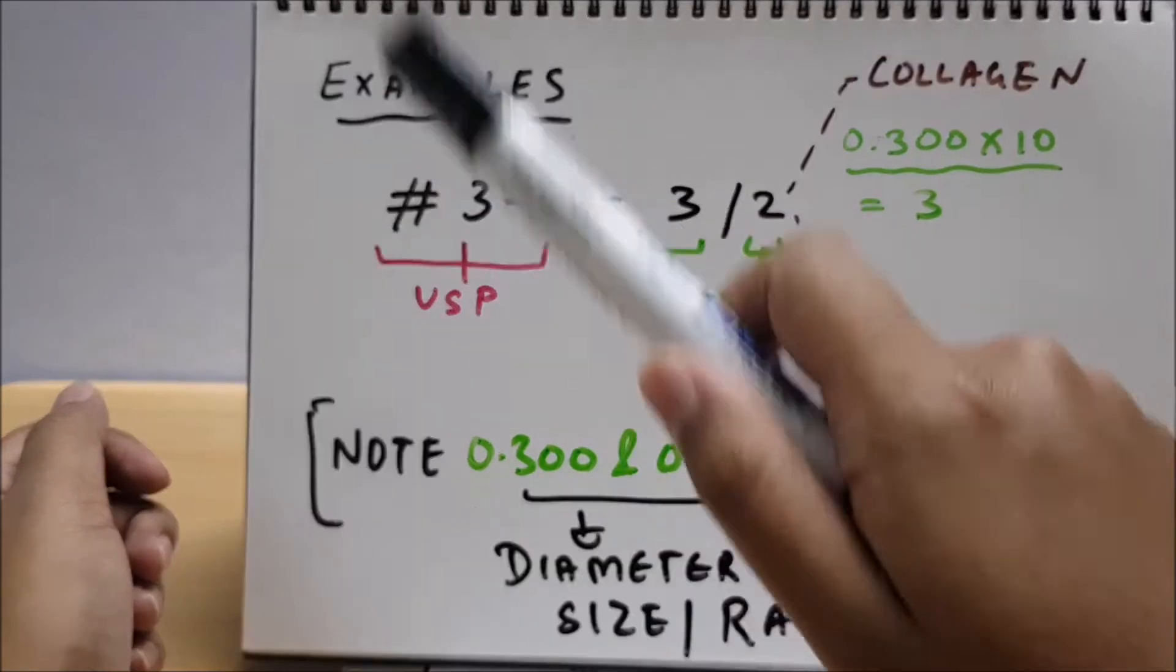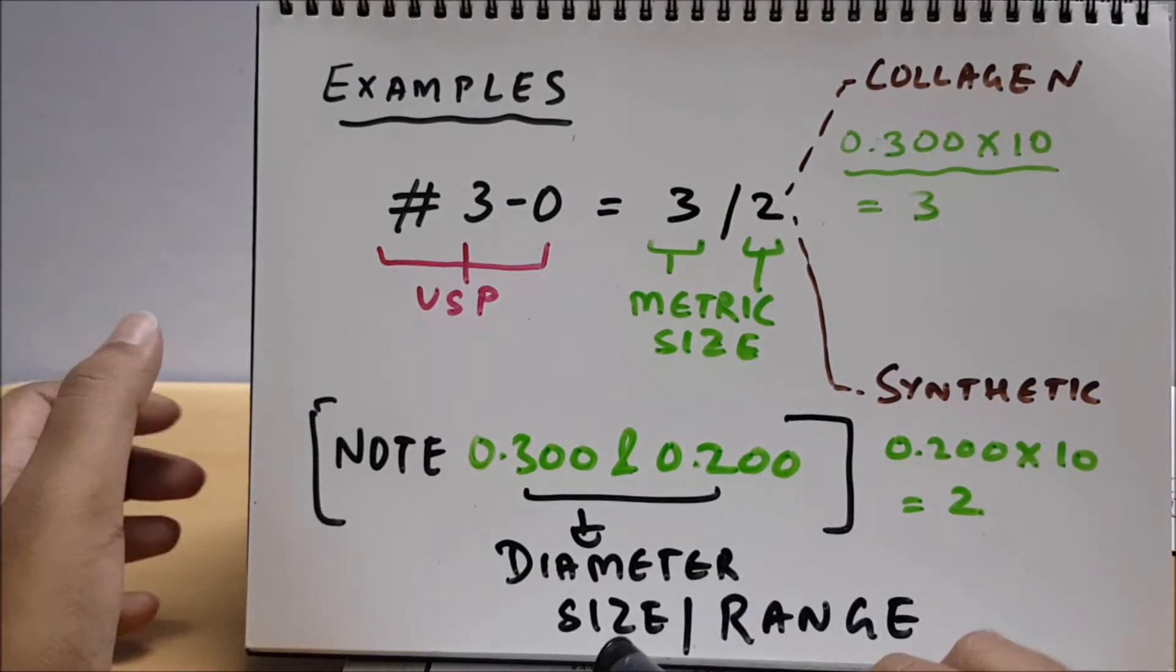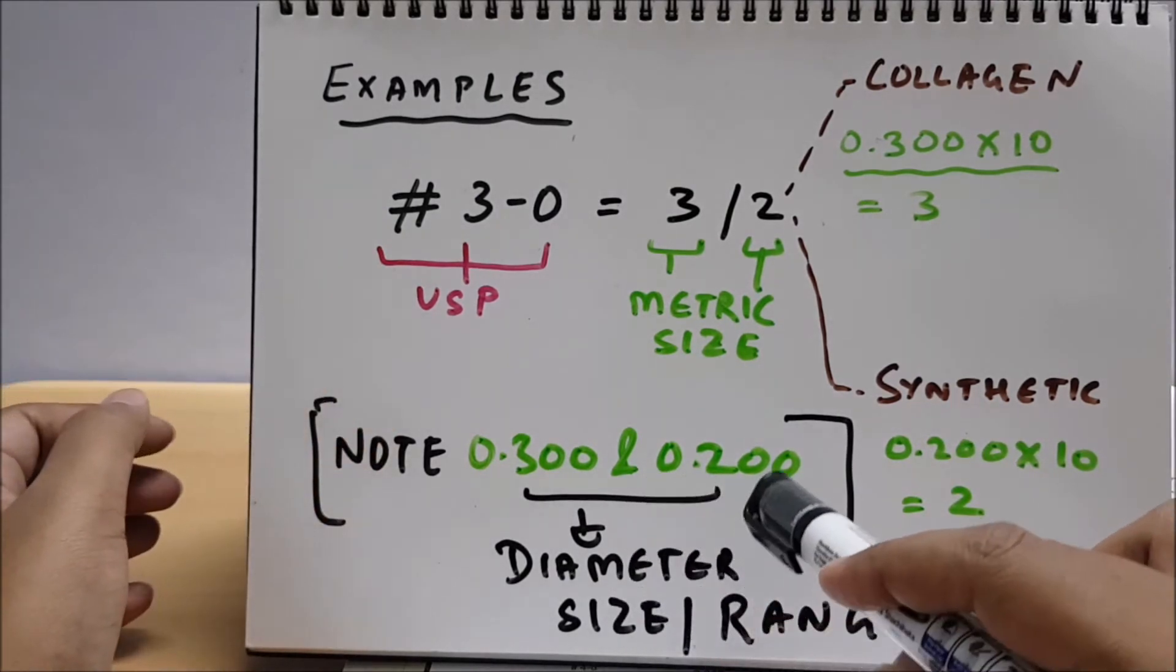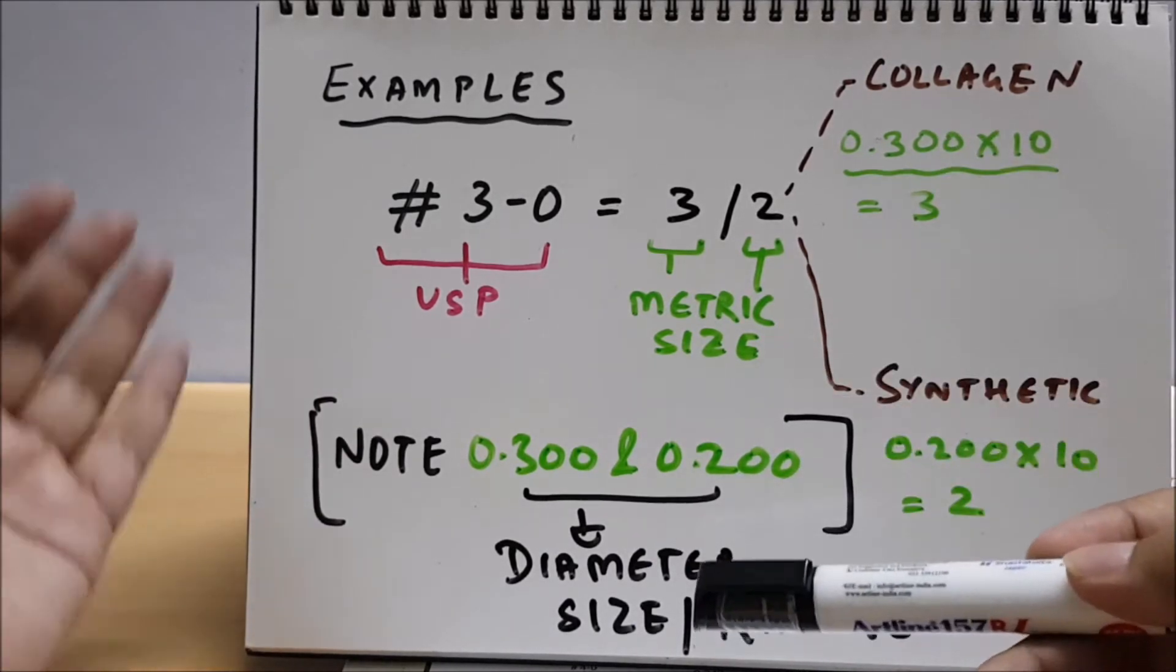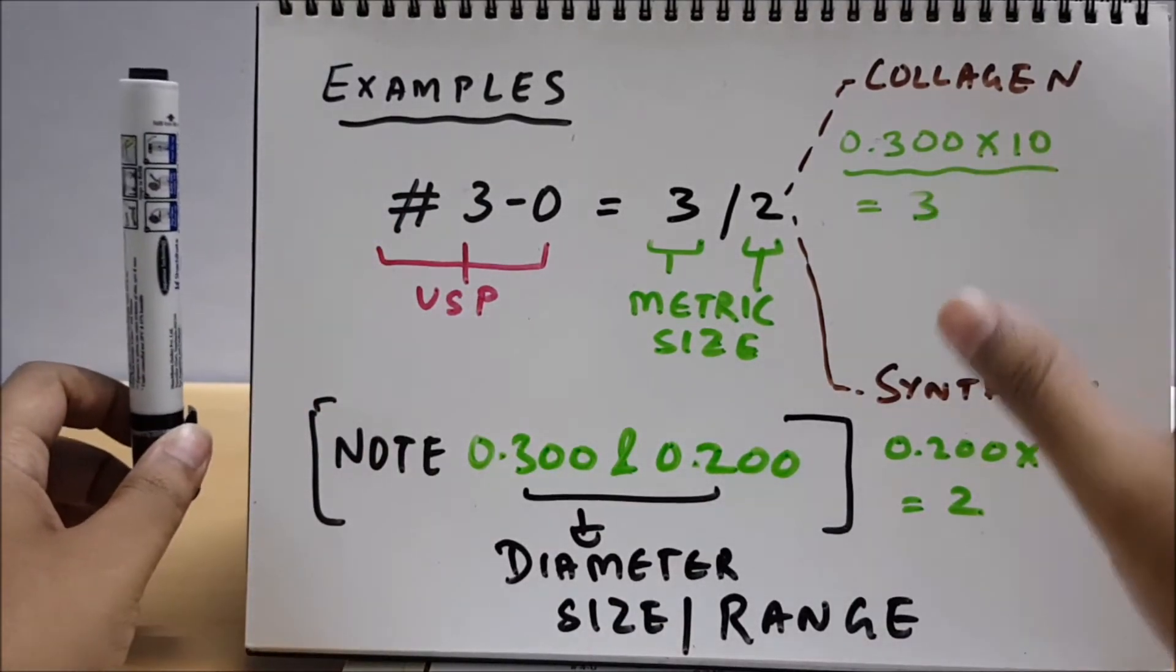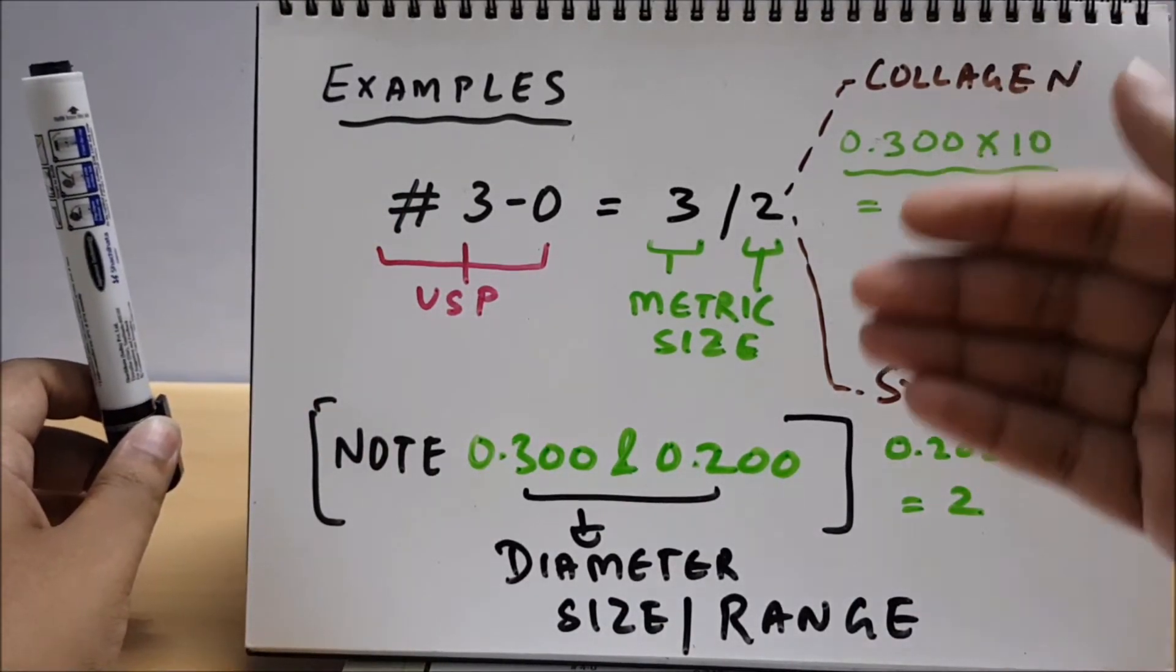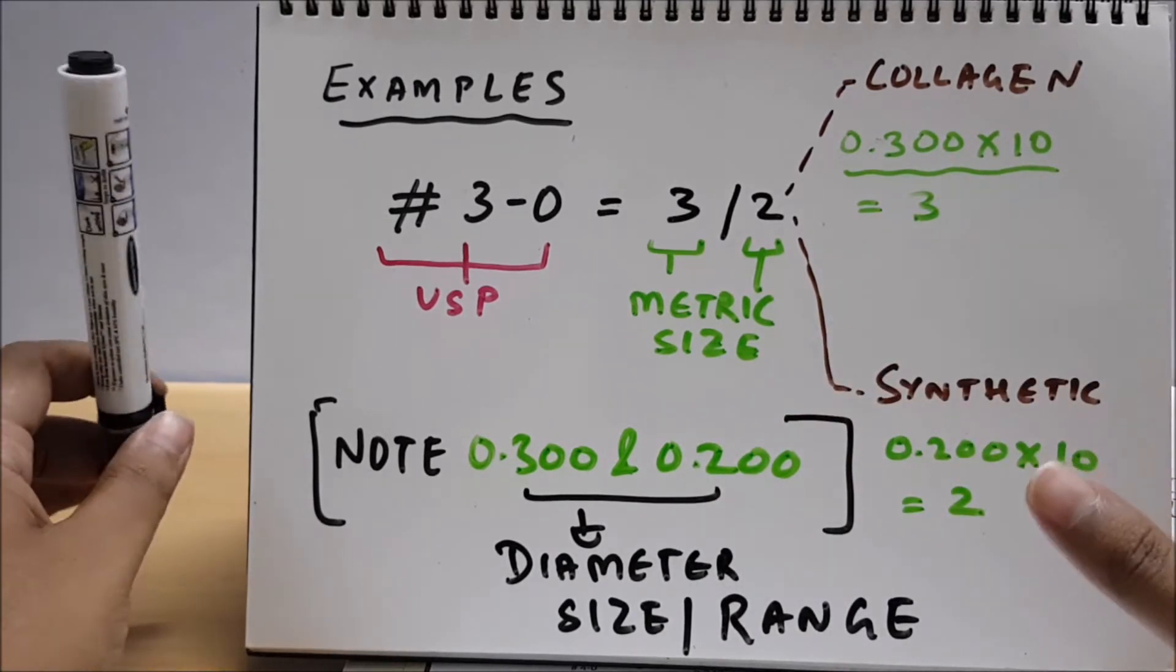Likewise in synthetic, you can see. Note: we have to note that 0.300 and 0.200 are diameter size of that suture in millimeters, friends. This is in millimeter. Remember the unit. So basically, metric size is 10 times the diameter in millimeters.